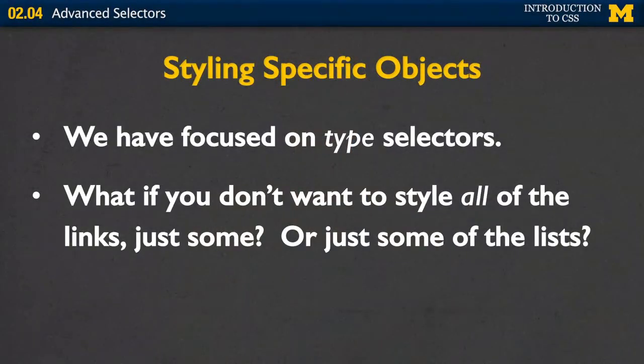Today we're going to be talking about advanced selectors. Up until this point, when we've been writing our rules, we've been writing them for a specific type of tag — H1, P, or H2 — covering all elements of that type. But what if you don't want to style all of the links, just some of them? Or you don't want to style all of your lists, just some of them? Now we're going to talk about advanced selectors that let us do just that.